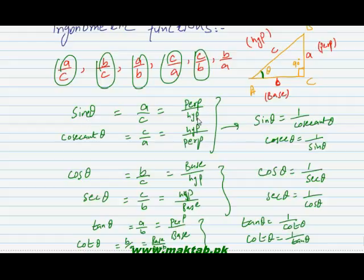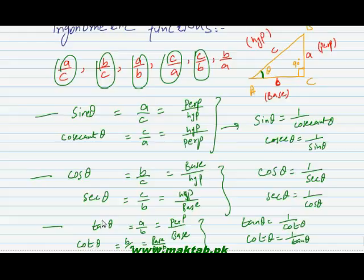Sin theta is equal to perpendicular over hypotenuse, cos theta is equal to base over hypotenuse, and tangent theta is equal to perpendicular over base. These three are sin theta, cos theta, and tangent theta. Then we have the inverses: cosecant, secant, and cotangent. So sin theta, cos theta, and tangent theta are basic, and then these are their inverses — cosecant, secant, and cot. We have six ratios which convert to six trigonometric functions.